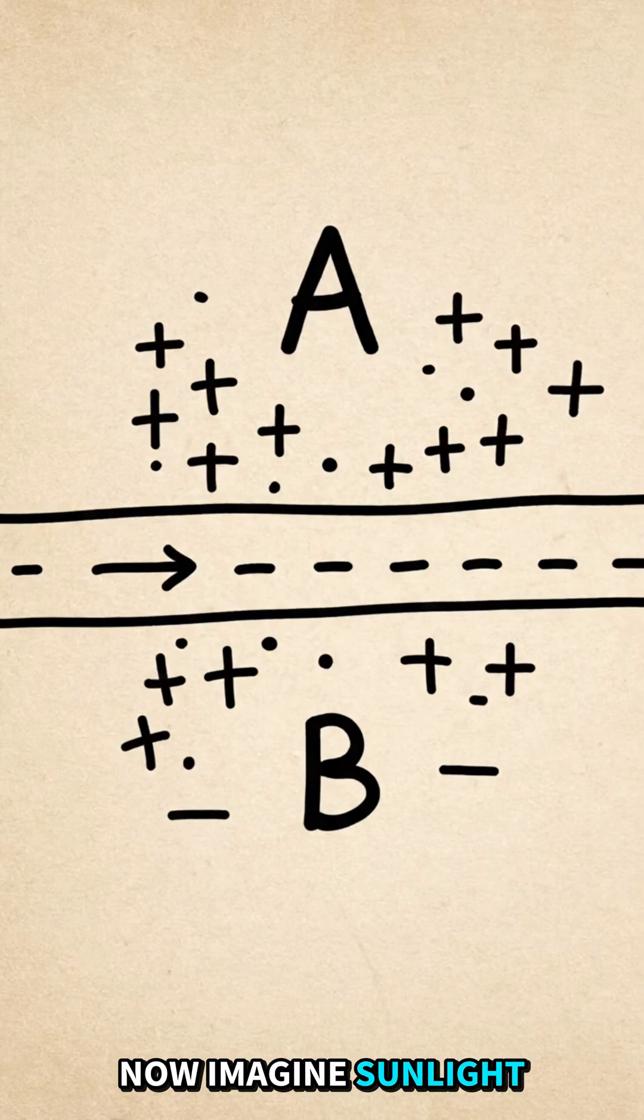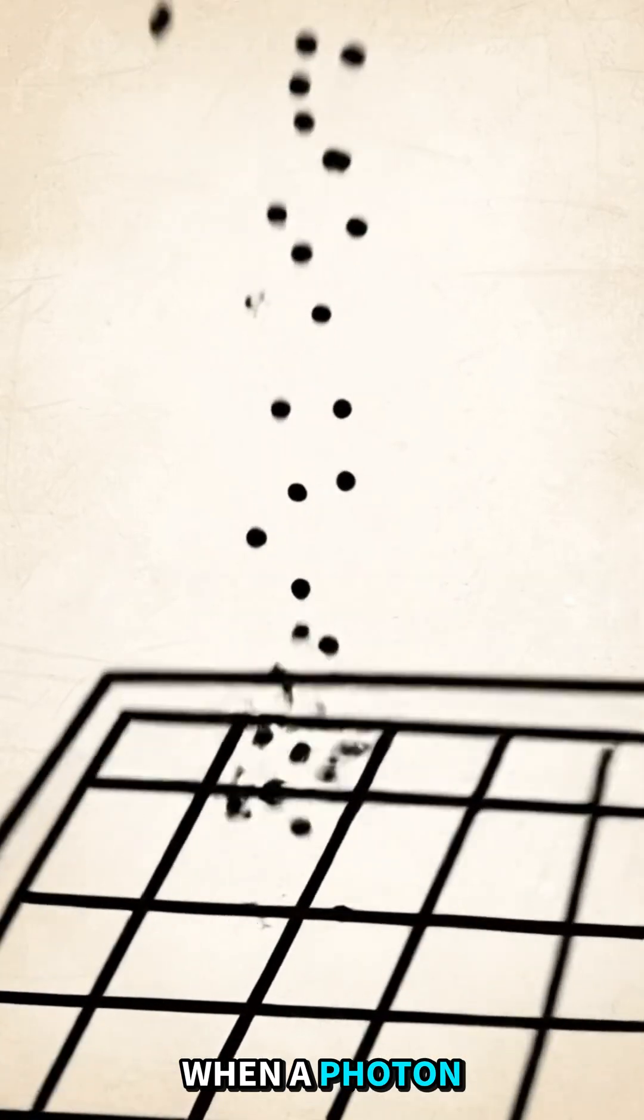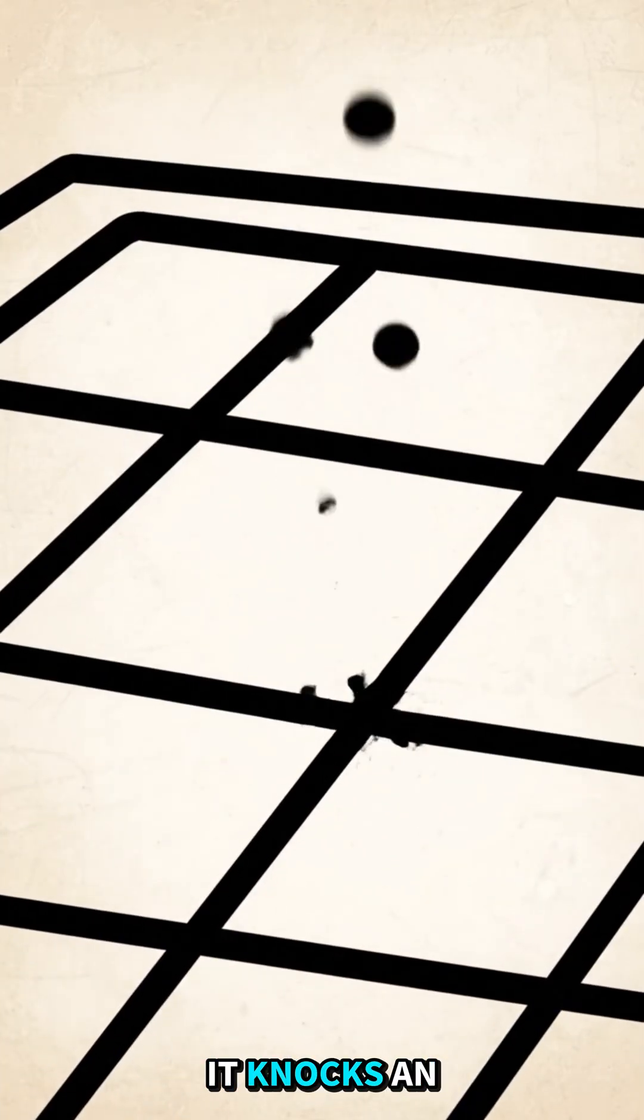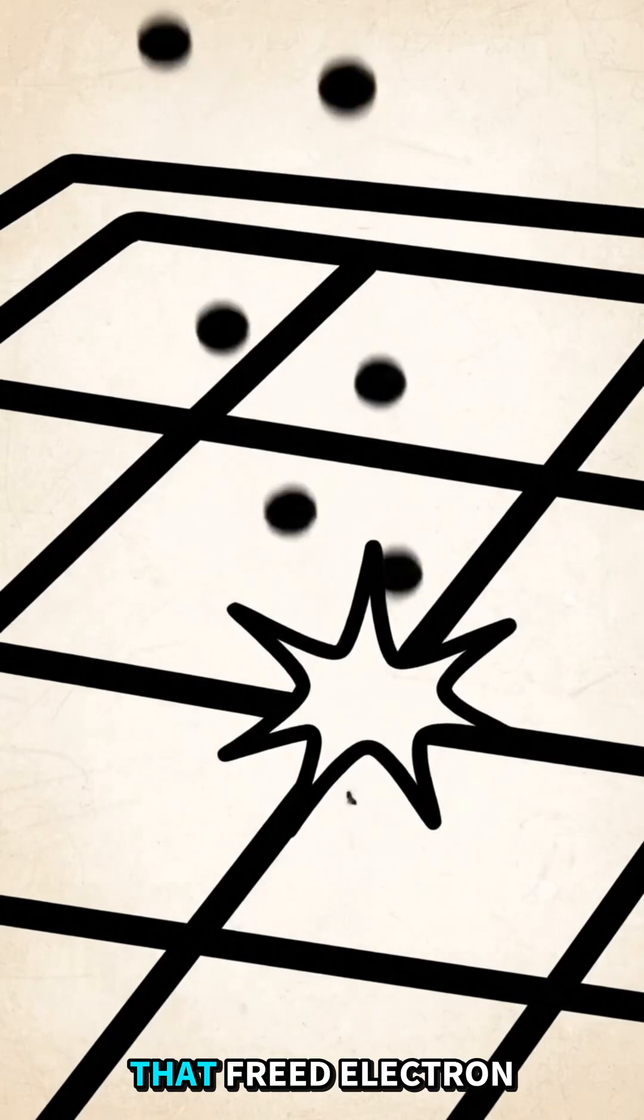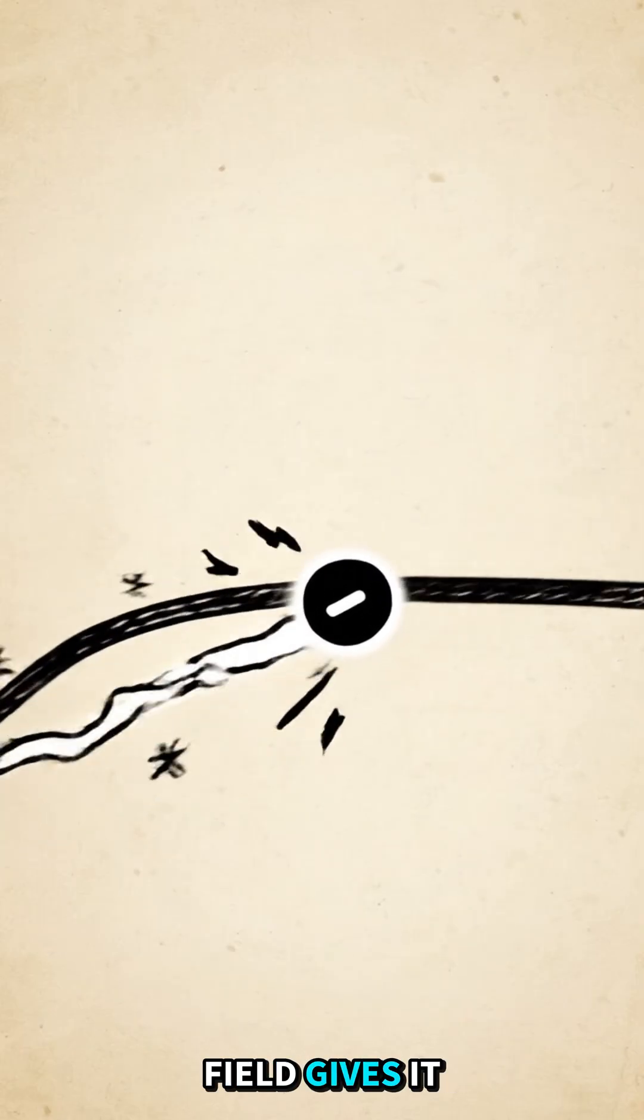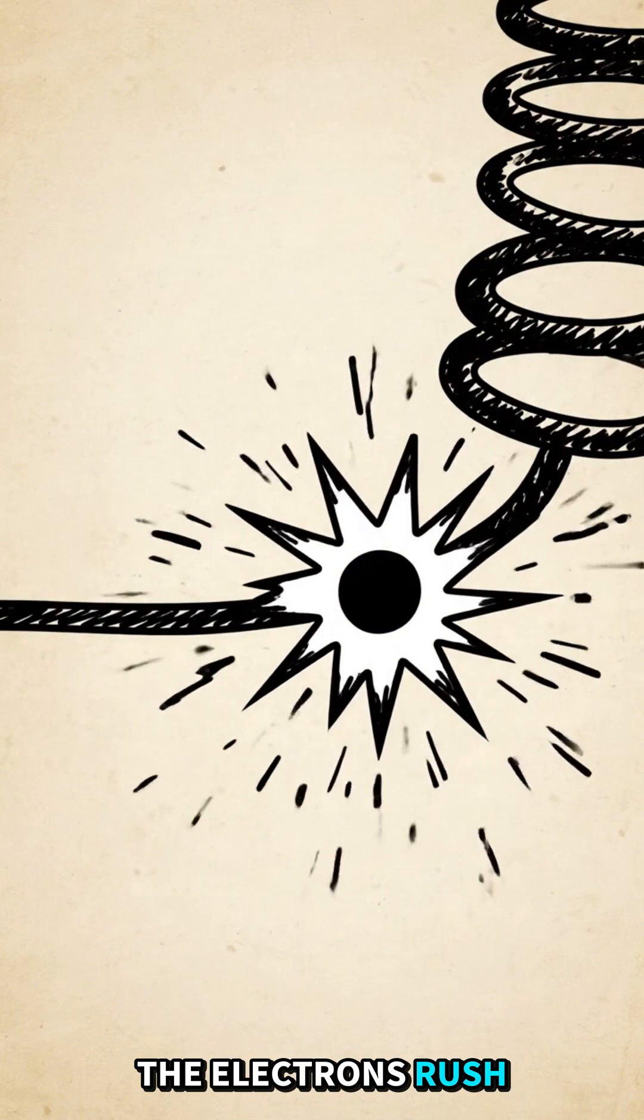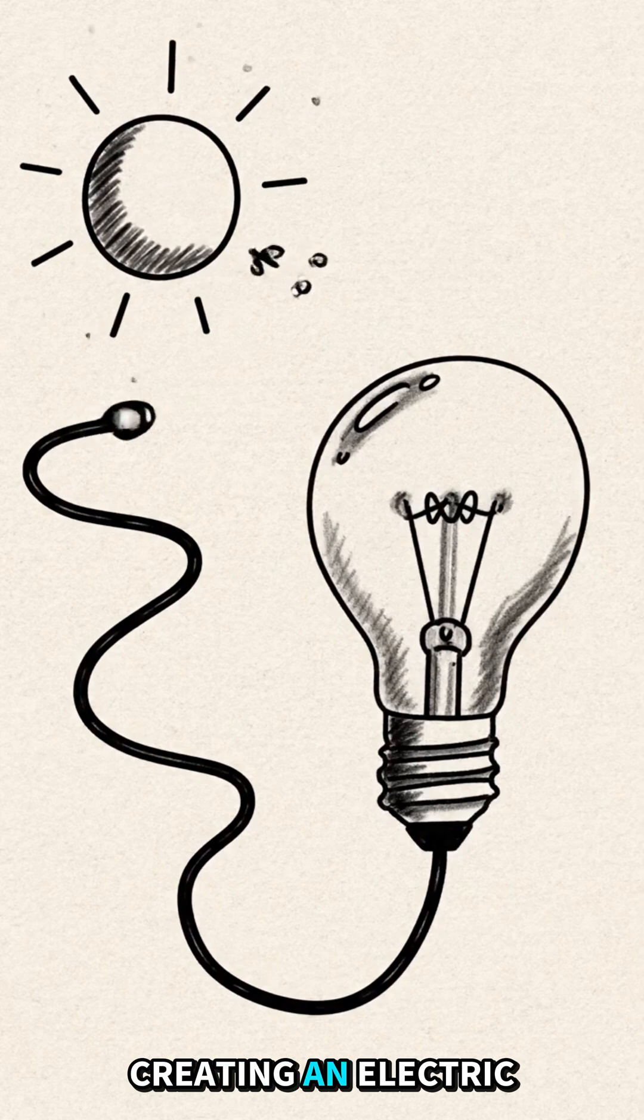Now imagine sunlight as tiny particles called photons. When a photon hits the silicon, it knocks an electron loose. That freed electron wants to move, and the electric field gives it only one direction to go. The electrons rush through tiny wires, creating an electric current.